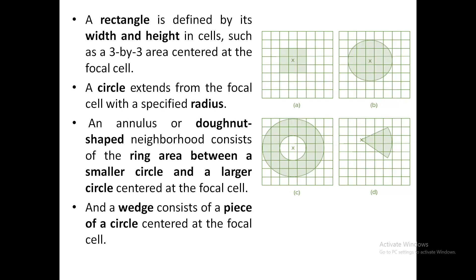The fourth type is wedge. In both circle and annulus, you work on the radius for measurement. In wedge, you will also have a focal cell, but only in one particular direction you are going to have the neighborhood cells. Circle and annulus cover the neighborhood throughout or in the surrounding, but in wedge you are going to have the neighborhood cells in only one particular direction, and the measurement also uses the radius. These are the four different types of neighborhood cells.